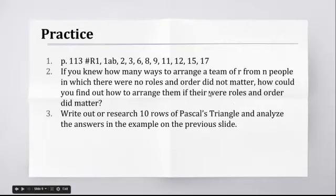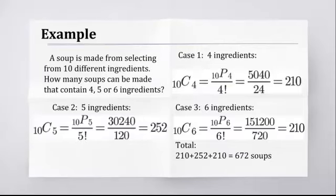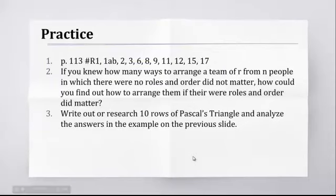Write out or research 10 rows of Pascal's Triangle. It might be helpful to actually write them. If you don't want to, you can just Google Pascal's Triangle. And Google Image Search will get you, I think, a 13-row triangle almost right away. And analyze the answers in the example on the previous slide. So I want you to actually go back and look at these answers after you look at the first 10 rows of Pascal's Triangle. By the way, 10 rows means row 10 is the one that starts with 1, 10. Row 9 is 1, 9, so the first guy doesn't count as a row. It counts as row 0.